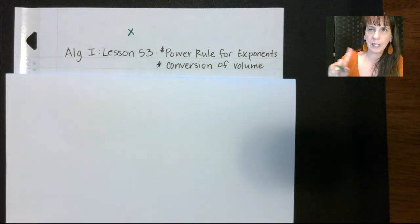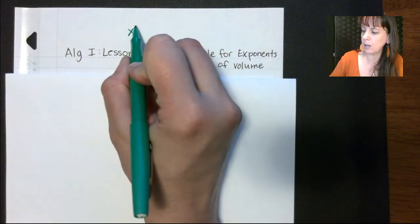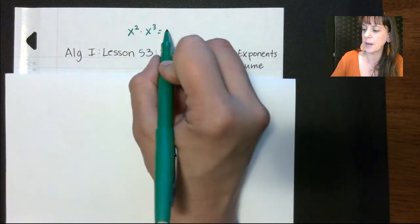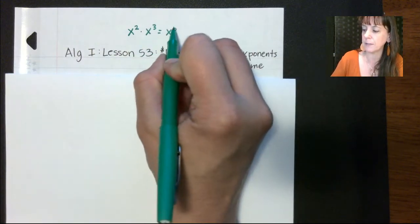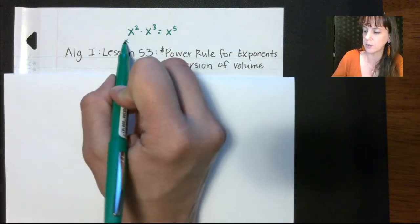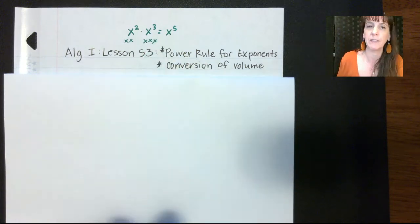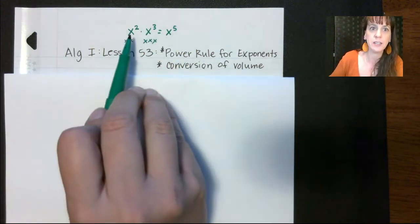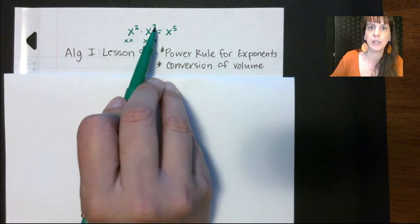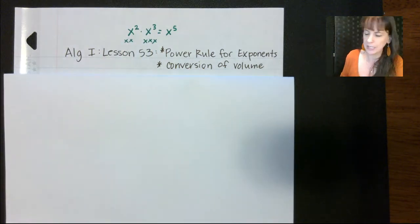First let's back up and talk about the product rule for exponents. If you recall, x squared times x to the third gives you x to the fifth, because we have two x's here and three x's here — so two x's plus three more x's gives us a total of five x's. You can see that we are adding the exponents, even though we are multiplying the bases.